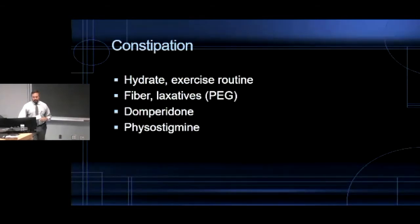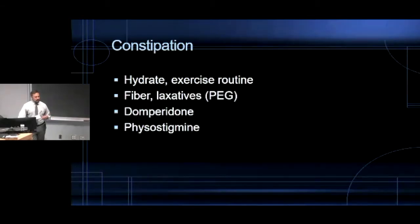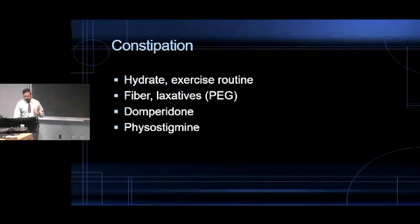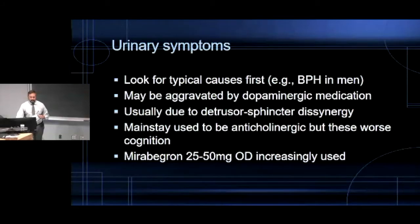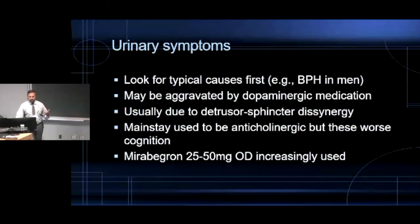Constipation predates the condition but is often very severe — hydrate them, keep them walking, ensure they're getting fiber, prune juice, and so on. Polyethylene glycol can be helpful. Domperidone, because it antagonizes the peripheral action of dopamine, can be very helpful here too. For urinary symptoms, look for typical causes first such as prostatic hypertrophy in men. The mainstay used to be anticholinergic medications, but these worsen cognition. Mirabegron is increasingly used and in my experience it doesn't really cause a lot of cognitive side effects — so patients who respond to antispasmodics might respond to mirabegron without worsening confusion.